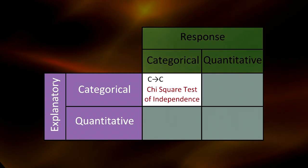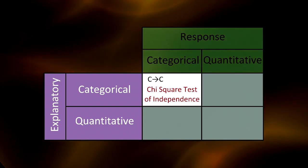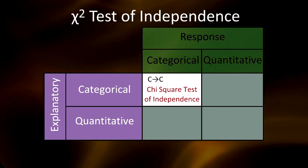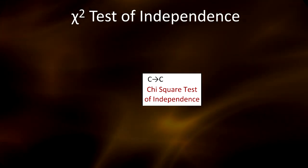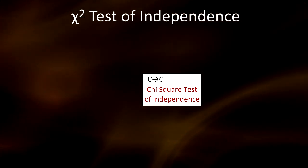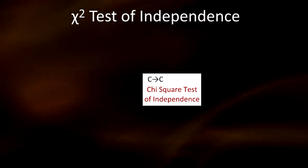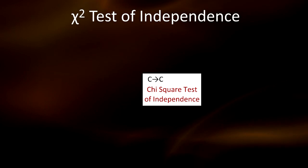The statistical test that will answer this question is called the chi-square test of independence. Chi is a Greek letter that looks like a large x, so sometimes you'll see this test denoted with an x squared. For this statistical tool, let's start with a new example.